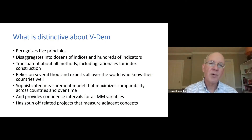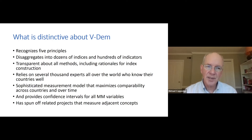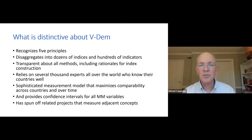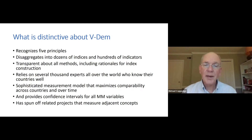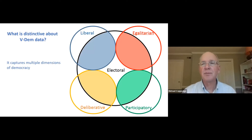What is distinctive about VDEM? First, it recognizes not one idea of democracy, but five different kinds of democracy principles or varieties of democracy. Second, it disaggregates these principles into dozens of indices and hundreds of indicators — it's very fine-grained measurement. We're transparent about all the methods we use, including the rationales for index construction. This is not a small team of people sitting in offices in Europe and the United States passing judgment on the rest of the world — we rely on about 3,500 experts all over the world who know their countries very well. We use a sophisticated measurement model that maximizes comparability across countries and over time, and we provide confidence intervals for all of the variables that are run through the measurement model. VDEM has also, in recent years, spun off related projects that measure concepts adjacent to democracy.